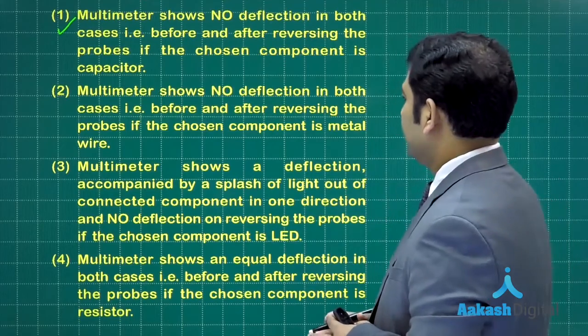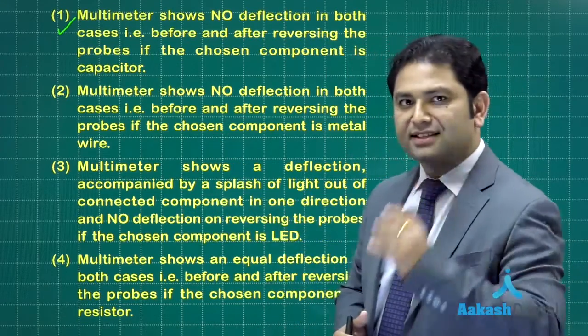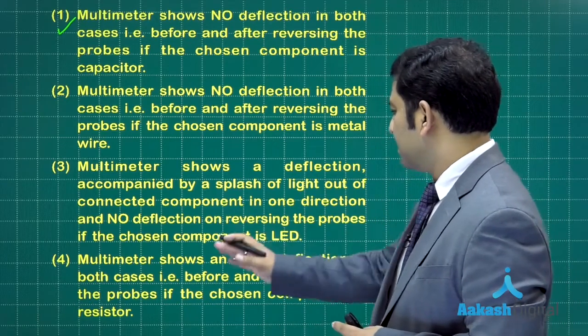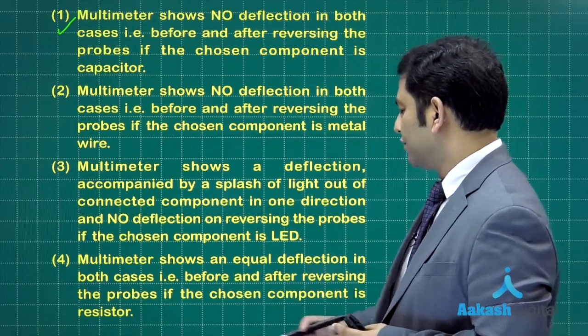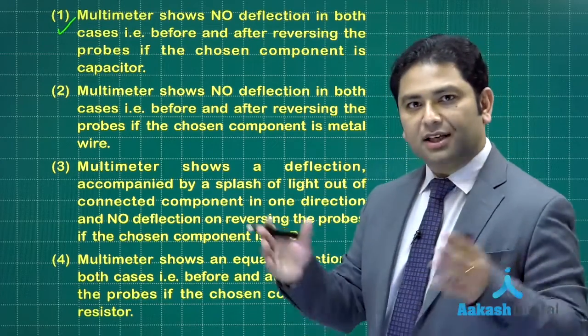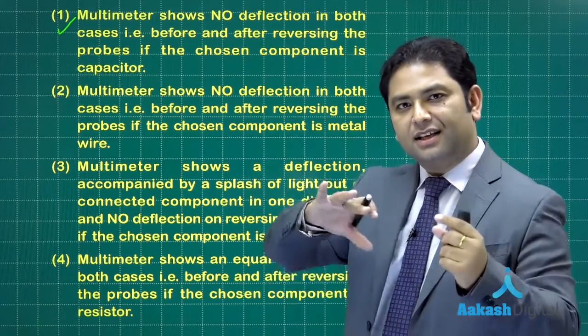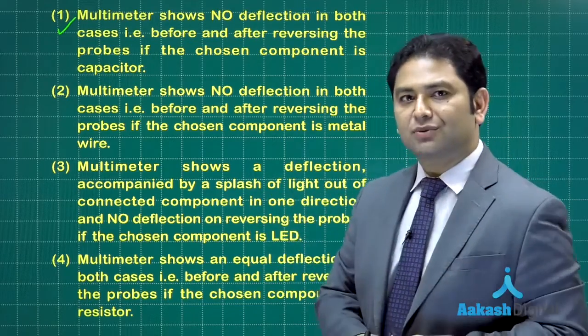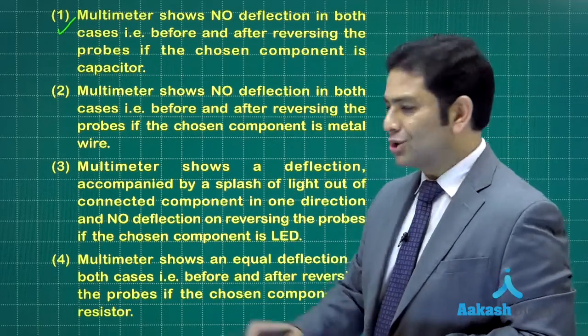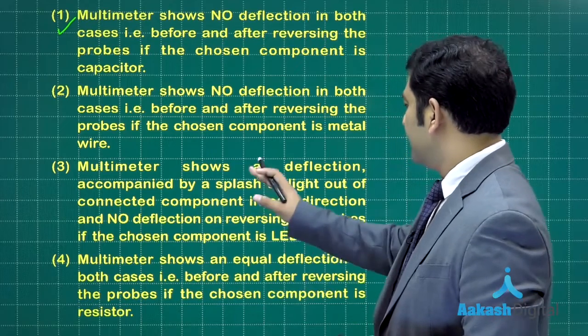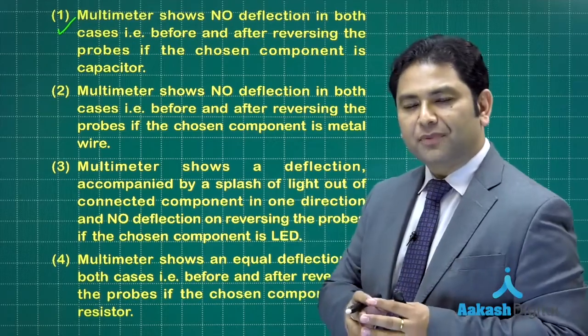However, let's take the opportunity to explore others as well. Let me go with 4, 3, 2 - that will make it an easier way. In case 4, it says multimeter shows an equal deflection in both cases, before and after reversing the probe, if the chosen component is resistor. Of course, just imagine a voltage source connected across a resistor - either way you connect, the value of current would be same. So this is an event which will happen, so we will not choose that.